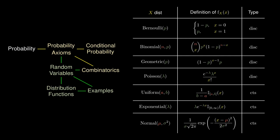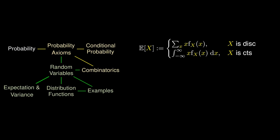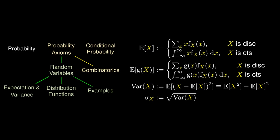A really important question to ask is: what is the average value of the random variable, and how much does it vary? We can define the expectation of a random variable as a weighted sum, in both the discrete and continuous cases. We can generalize this to compute the expectation of g(X). This helps us define the variance — the expectation of the squared error from the mean — and the standard deviation as the square root of the variance.